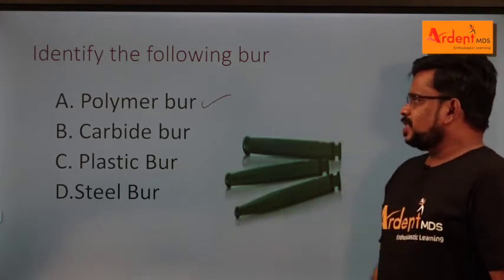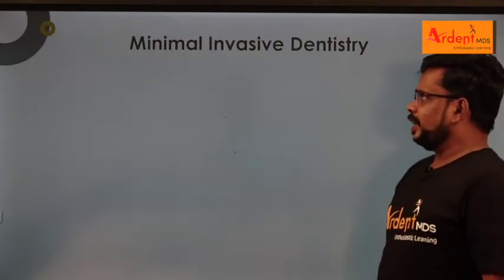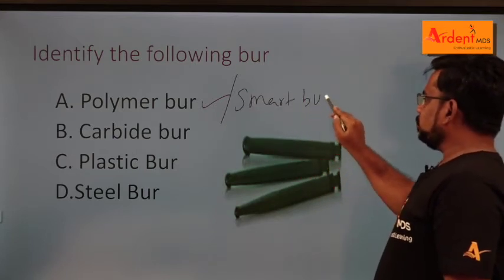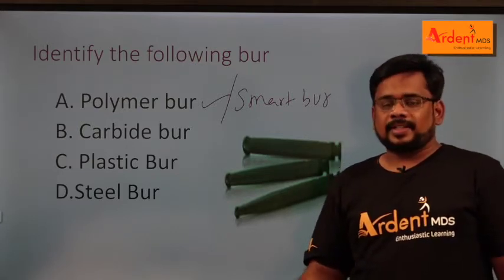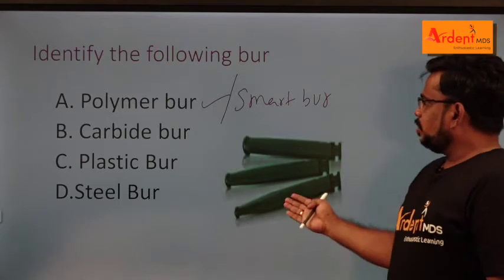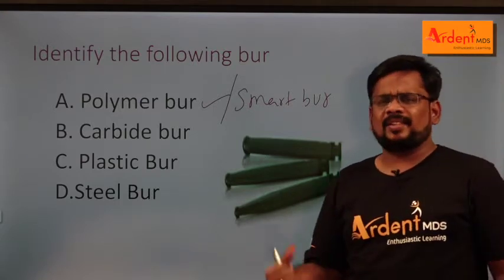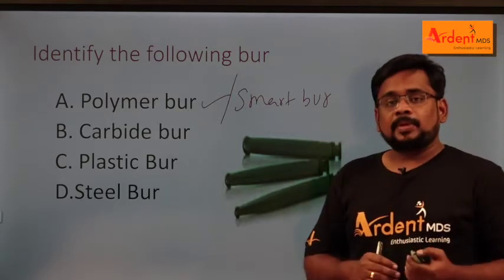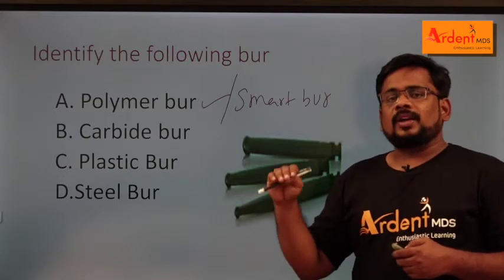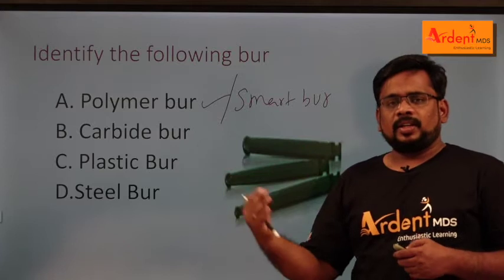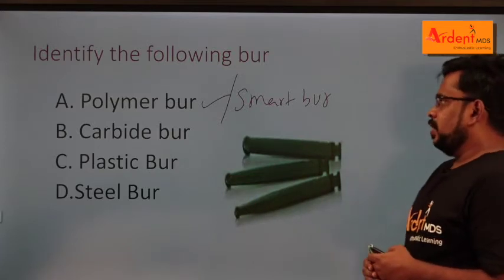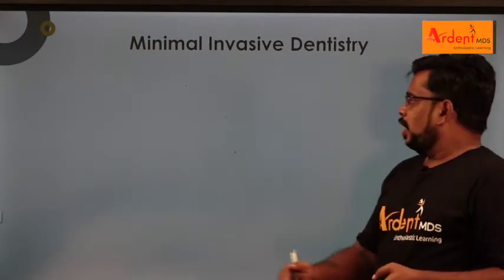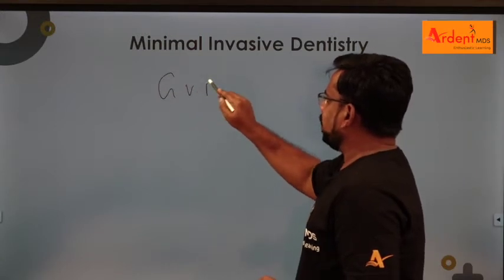The polymer bur falls under minimal invasive dentistry and is otherwise called a smart bur. It is one of the smart materials in dentistry. It is called a smart material because when you use a diamond bur or carbide bur, it removes normal healthy tooth structure along with the decayed tooth. But today's concept is minimal invasive dentistry.